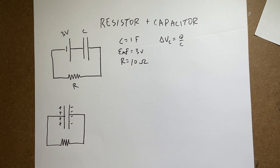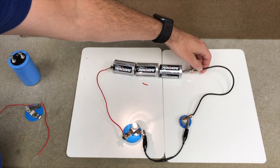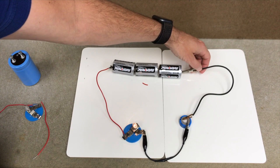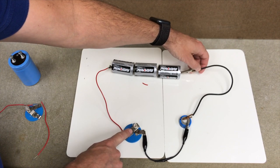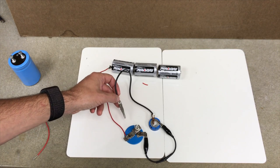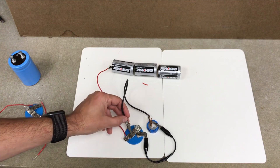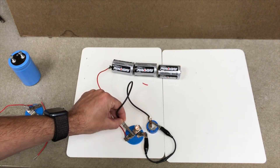Let me show you a quick demo — it's on another video, so just bear with me, I'm going to play it. So here I have a battery connected to a capacitor, and you'll notice the light bulb is my resistor. The light bulb starts off very bright but slowly gets dimmer.